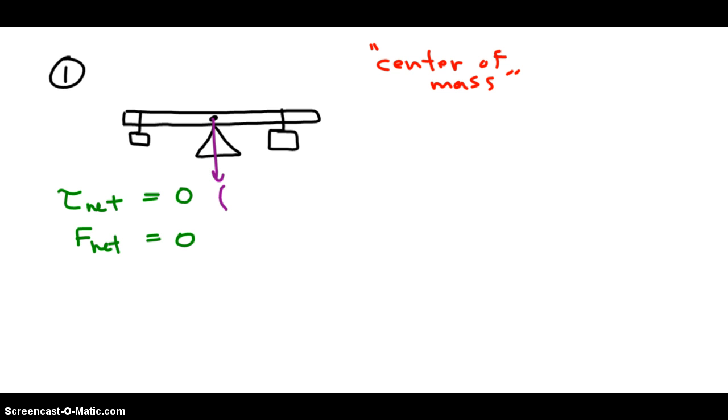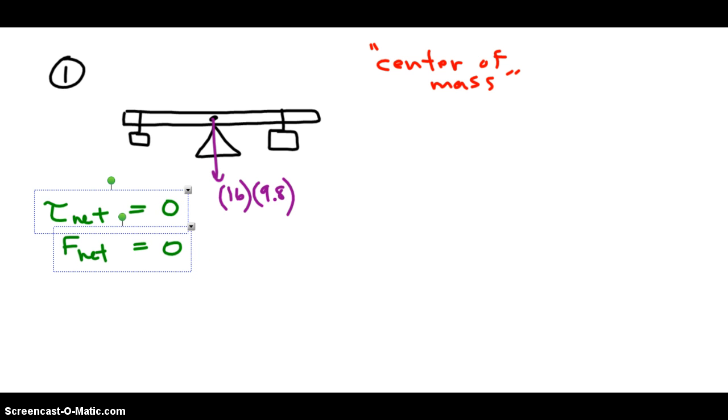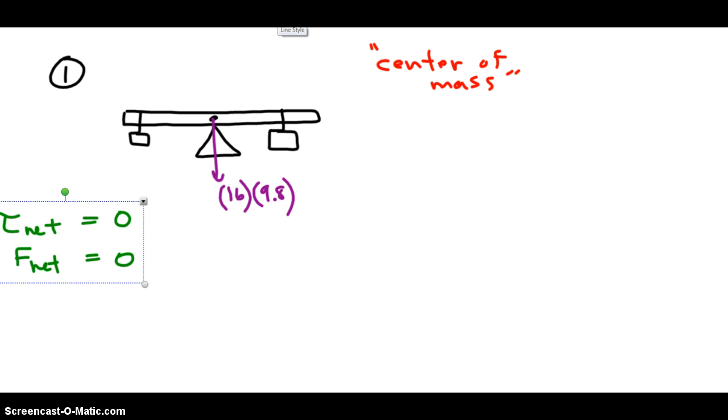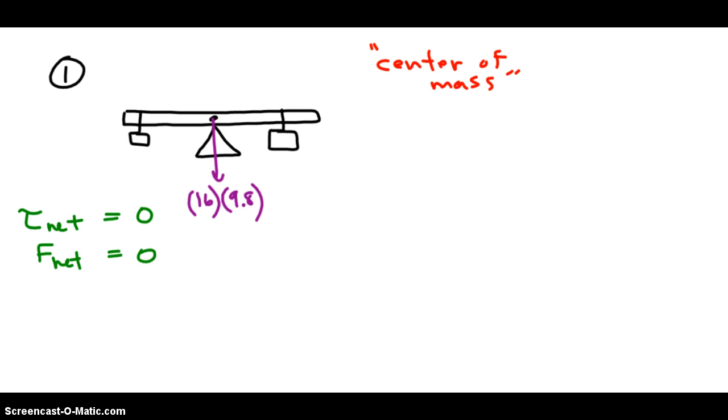So the point that I've drawn, right there, that's the center of mass, and at that point we can draw the force of gravity due to the seesaw's mass. So the seesaw has a mass of 16 kilograms, therefore the force of gravity on it is 16 times 9.8. And we are going to use this trick, that gravity acts at the center of mass, throughout all of the problems.